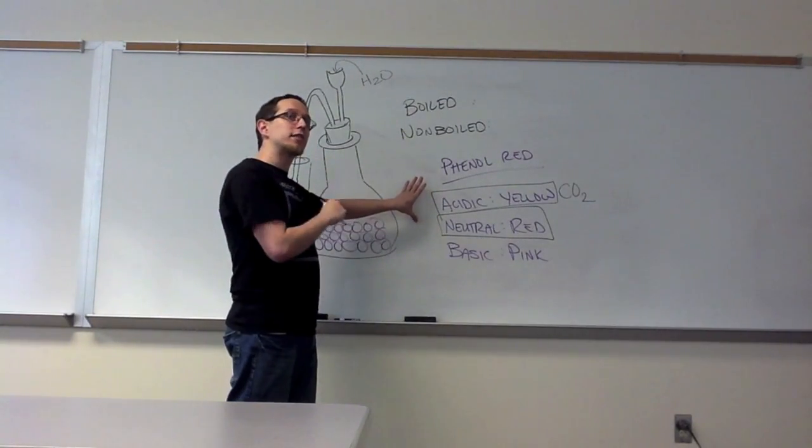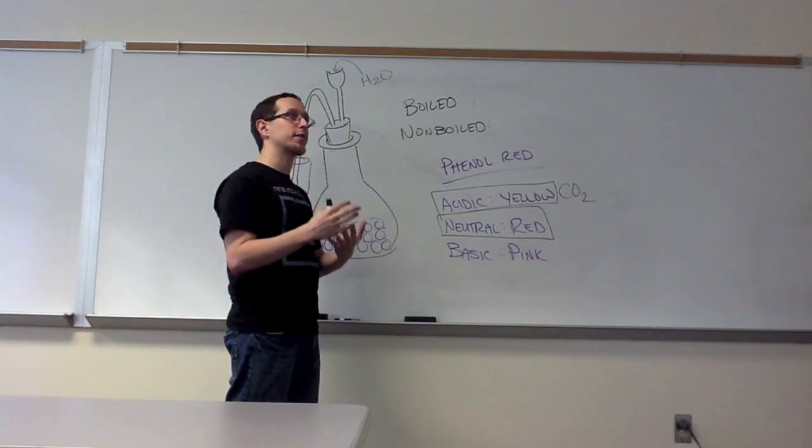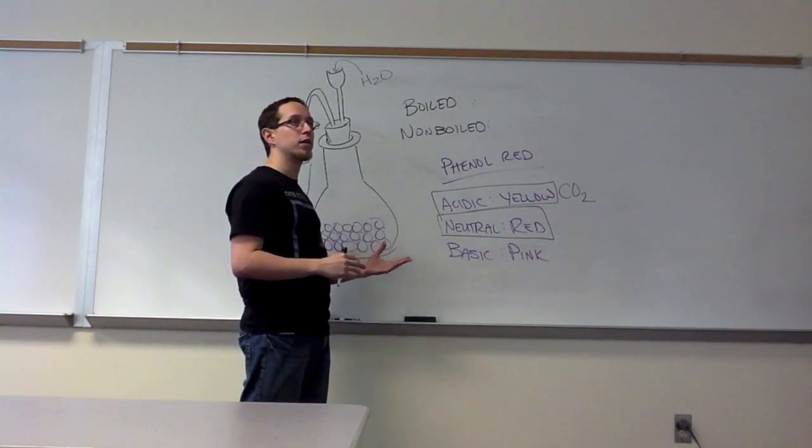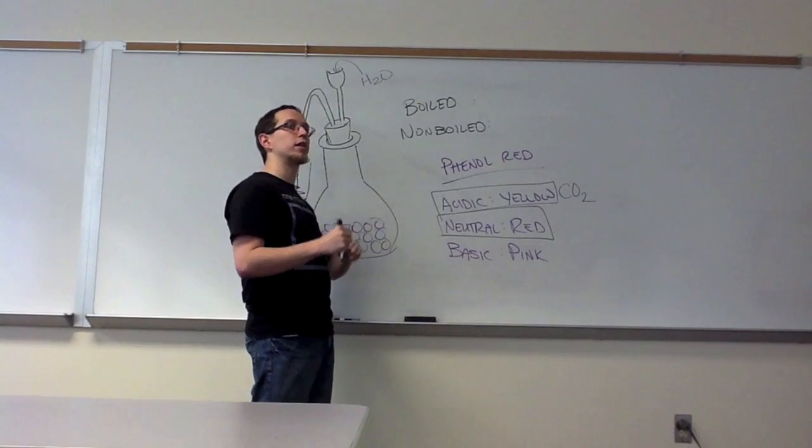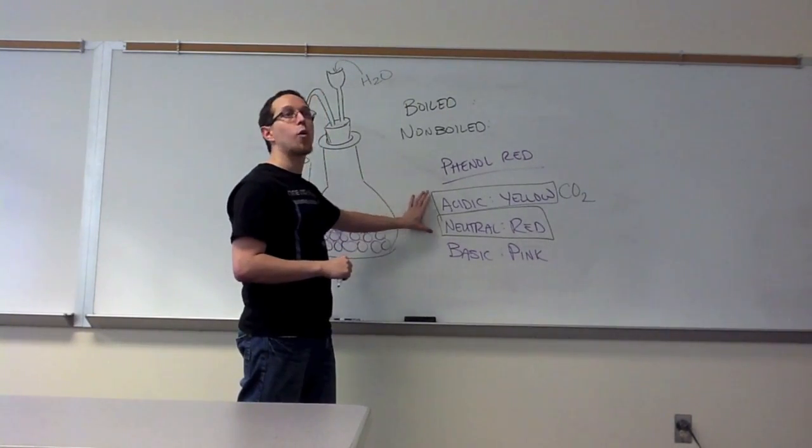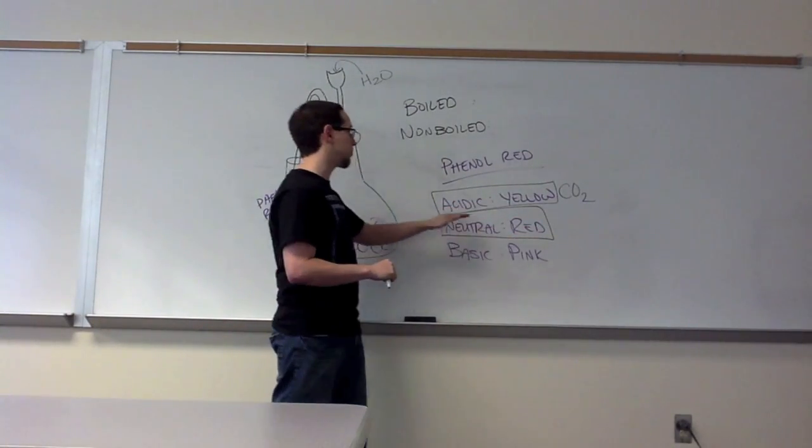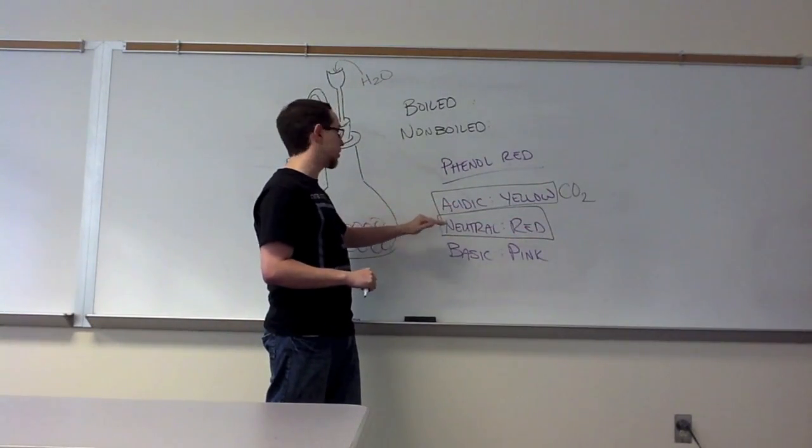One last thing. The mouse experiment that we talked about previously is an example of a quantifiable metabolic rate, a quantitative analysis of the metabolic rate. This is a qualitative because we don't actually obtain any numeric values. We're simply asking, is CO2 present or is it not?